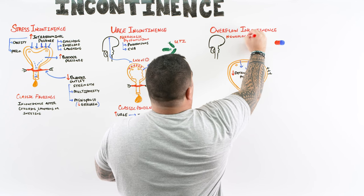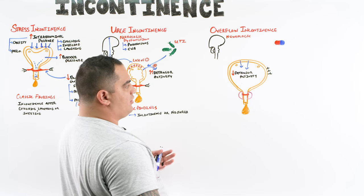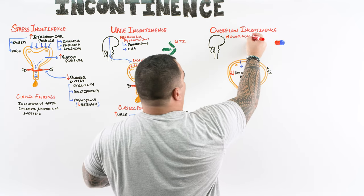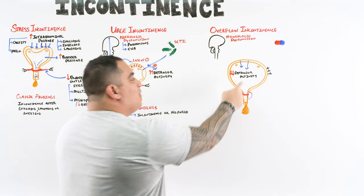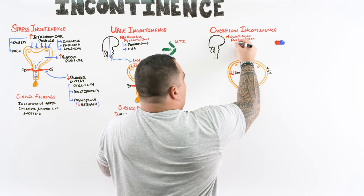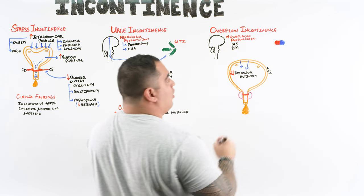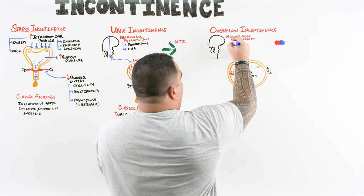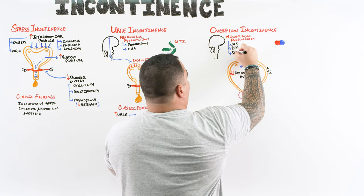Neurological dysfunction can cause either urge or overflow incontinence — it can increase or decrease detrusor activity. With neurological dysfunctions, you're more likely to get overflow incontinence. Common neurological causes include multiple sclerosis, diabetes causing neuropathy affecting peripheral nerves, and spinal cord injuries.